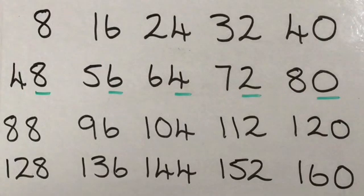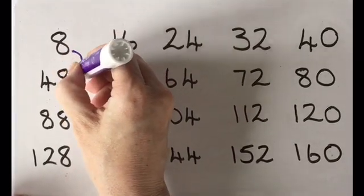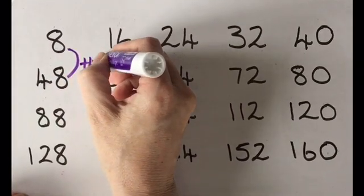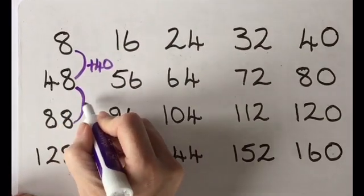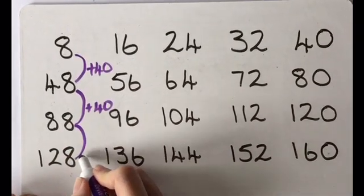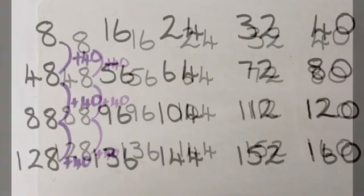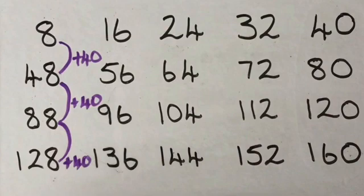Giving the learners time to talk with a partner, they reasoned that if you added 10 each time the last digit would stay the same, but because 8 is 2 less than 10, the last digit decreases by 2 each time, giving you the 8, 6, 4, 2, 0 pattern. One pattern my learners noticed was that the numbers down each column increased by 40 each time. When asked how they knew, they said the tens column increased by 4 each time. When asked why, they stated that there were 5 lots of 8 in each row — they knew 8 multiplied by 10 was 80, so 8 multiplied by 5 was 40.